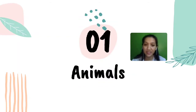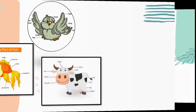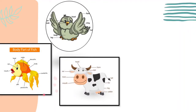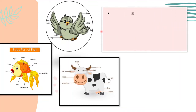Now let's discuss one by one. The first one: animals. We will look at three aspects — body parts, how they move, and how they eat. Look at those pictures: there is a fish, a bird, and a cow. What body parts do they have? They have heads, wings, fins, legs, and tails.